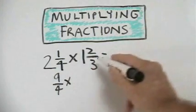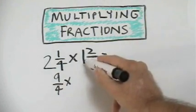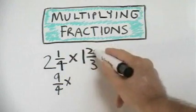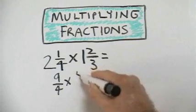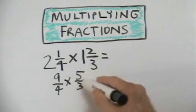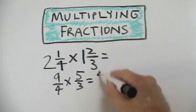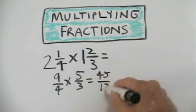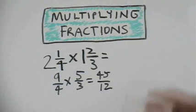Here, we multiply our three times one to get three. We add our two and we get five-thirds. Now, we multiply across as usual. Nine times five is forty-five. Four times three is twelve. And we get our improper fraction forty-five-twelfths.